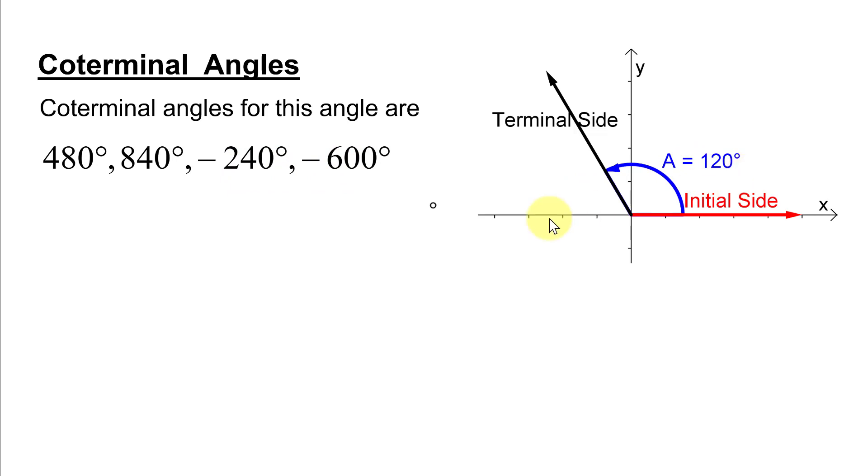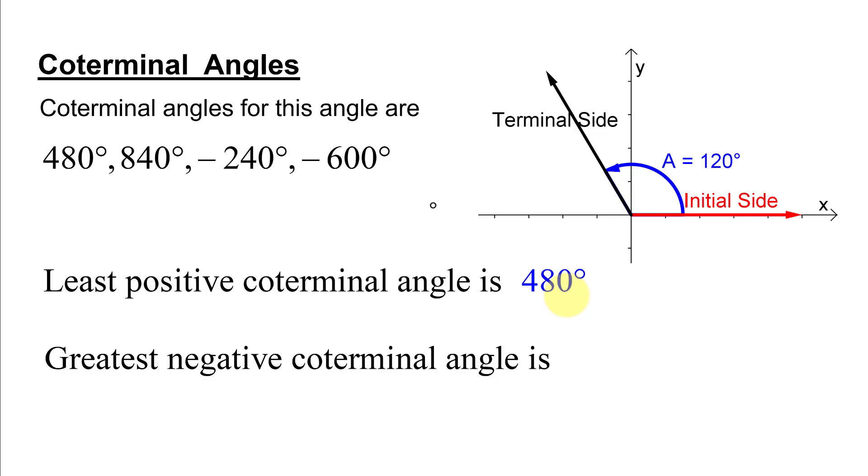But often in these types of problems, we're asked to find the least positive coterminal angle. So I have to have a positive angle. And if I keep adding 360, my angles are going to get bigger. So the least positive coterminal angle is 480 degrees.